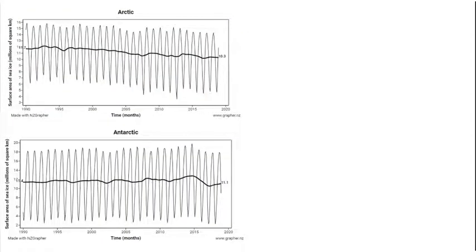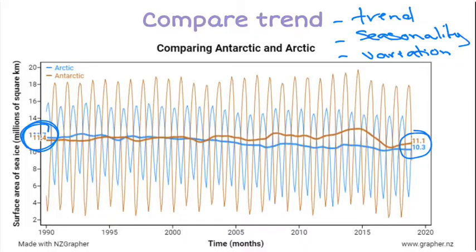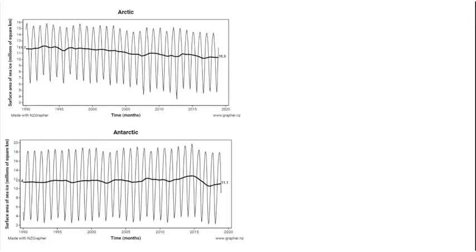The next thing I want to do is think about that trend in more detail. I've got the Arctic and the Antarctic graphs separately here. You'll notice it's harder to compare them when they're separate than if we had them on the same graph — that's a much better way to compare when they're on the same set of axes. But the reason I've done them separately is so that I can identify the start and end points more accurately, as they kind of overlap a lot on the same axis.